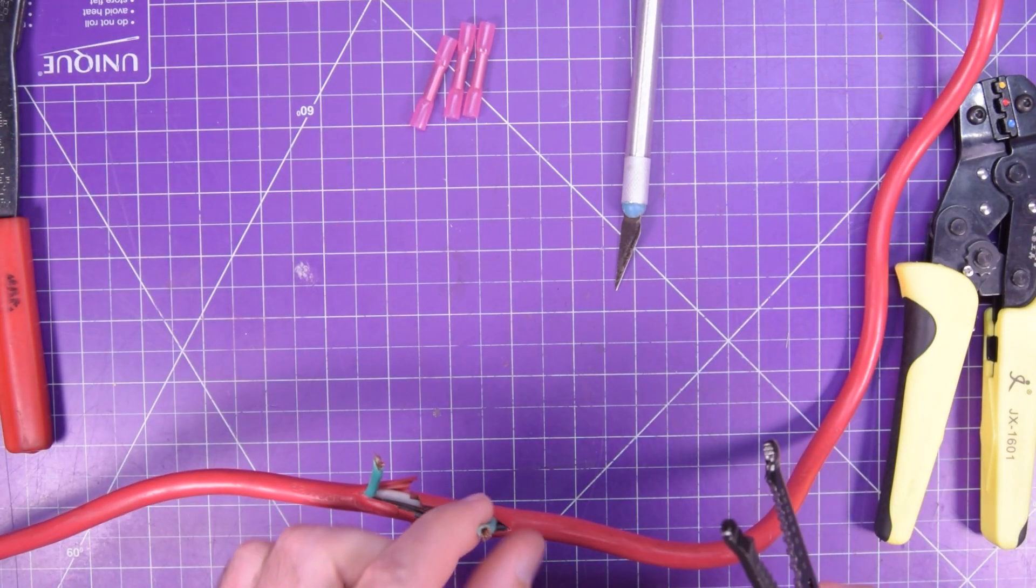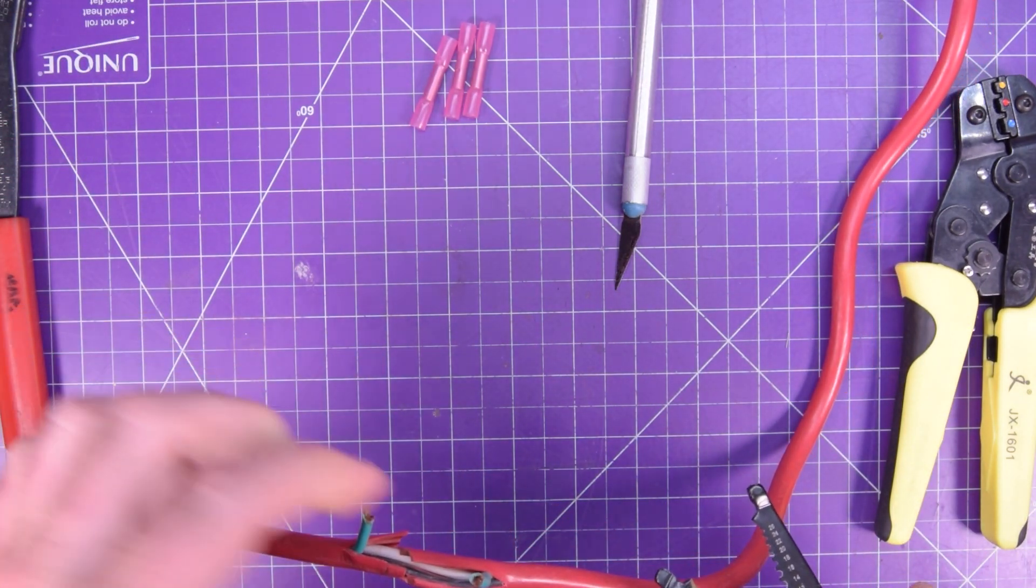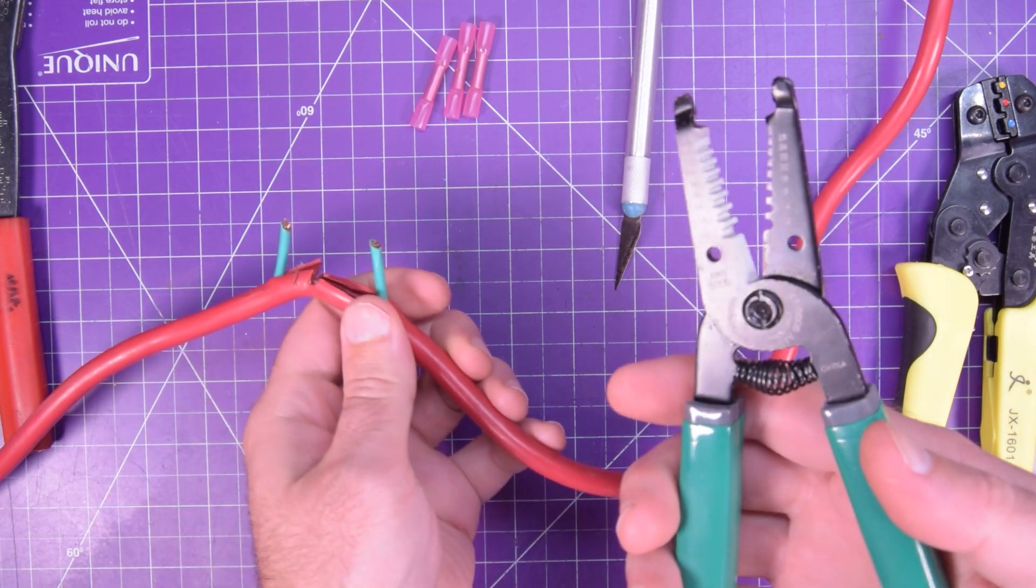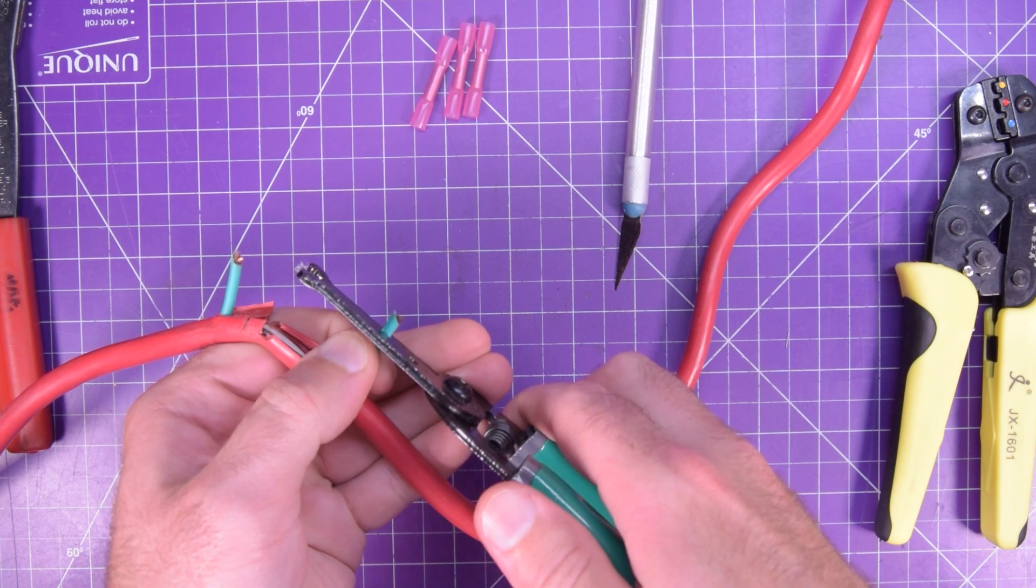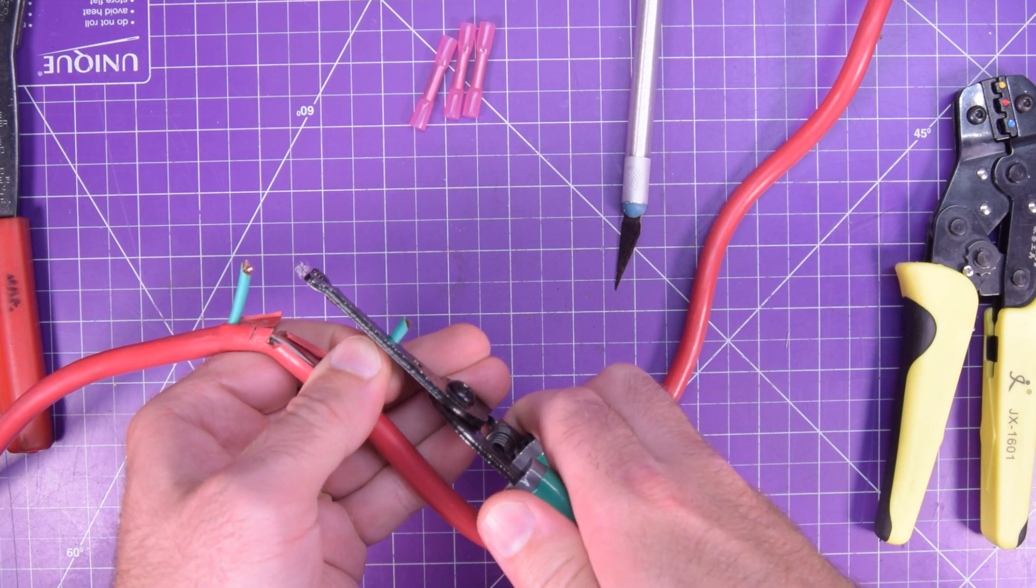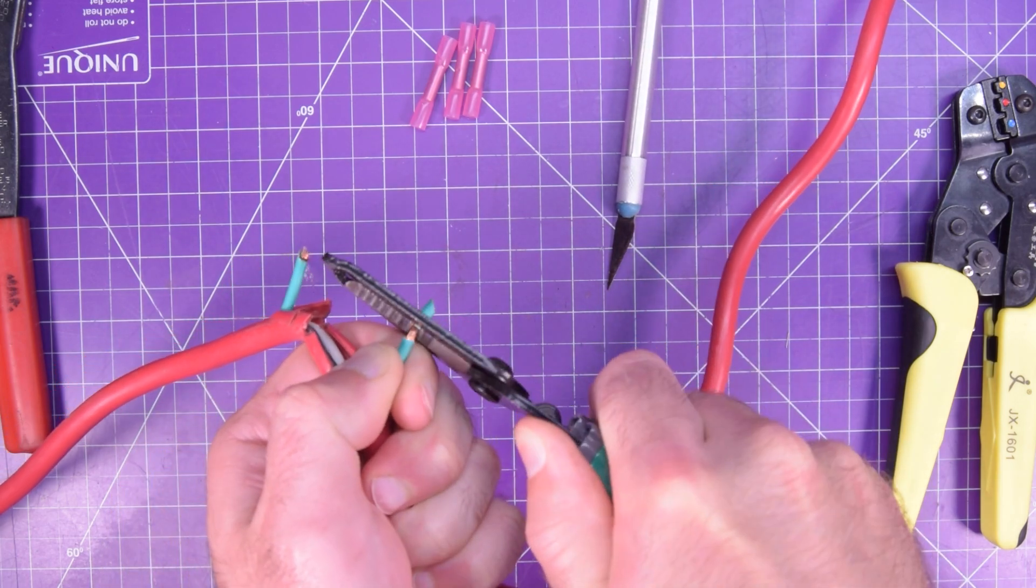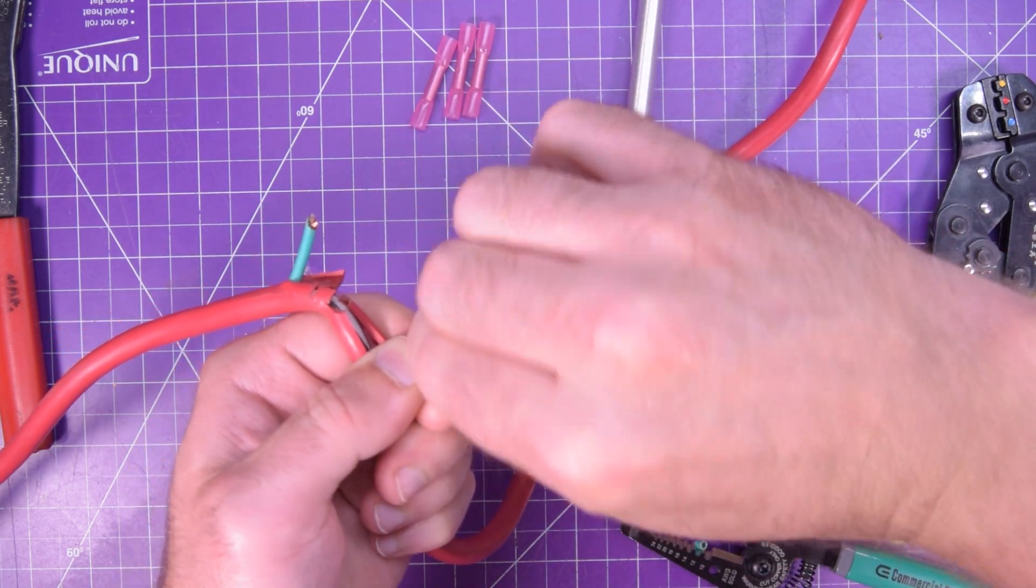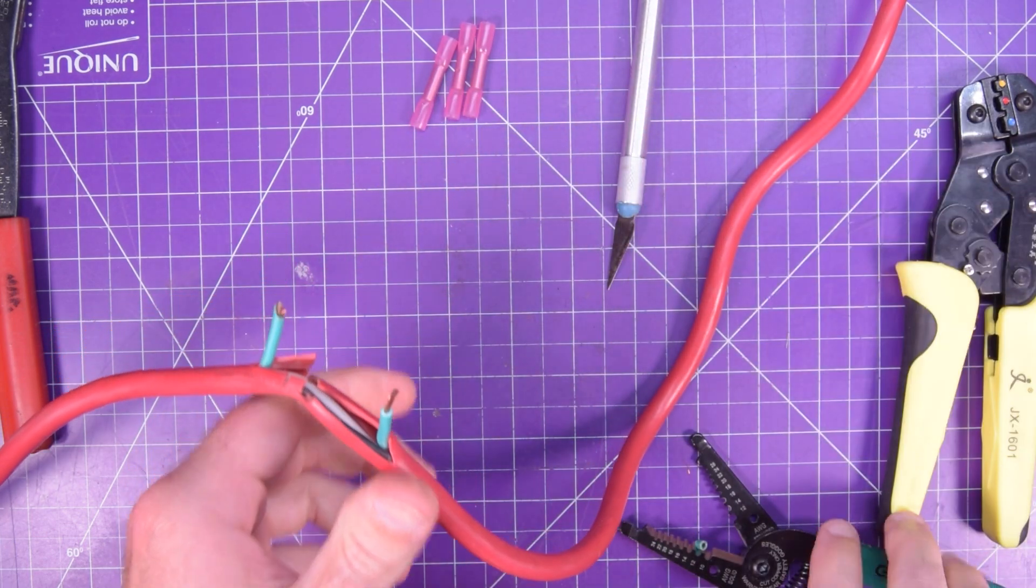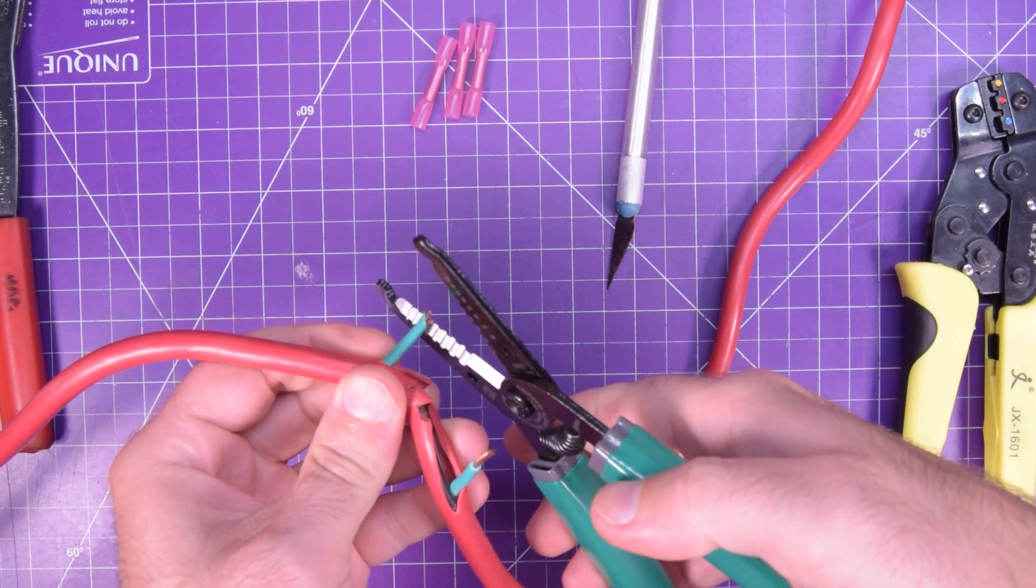Next, what you want to do is strip back a little bit of the insulation. So I have some wire strippers here, 14 gauge, pop it in there. I'm going to twist the wires together just so that they're neat and tidy. Same thing on the other side.